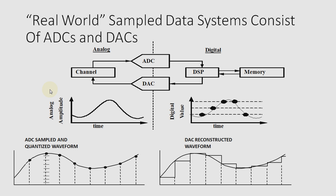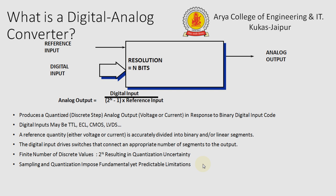These are the real-world sample data systems consisting of DAC or ADC, because the same process is going on in both. The analog signal is converted into a digital value by quantizing and sampling. It shows here how the signal is sampled, then how it is quantized, and from that quantized signal it is converted back again into an analog signal.